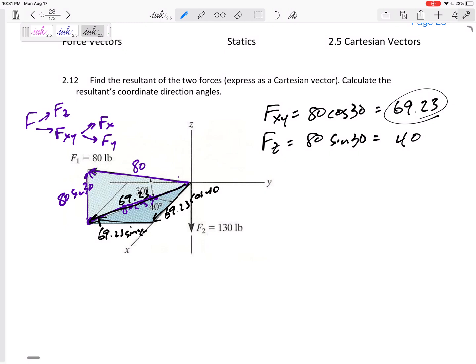All right, so the x component 69.23 cosine 40 is 53.07, and the y component 69.23 sine 40, this would be 44.53.